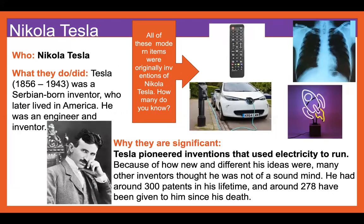Nikola Tesla, who was born in 1856 and died in 1943, was a Serbian-born inventor who later lived in America. He was an engineer and an inventor. All of the images were originally inventions of Nikola Tesla — how many do you know? Tesla pioneered inventions that used electricity to run. Because of how new and different his ideas were, many other inventors thought he was not of sound mind. He had around 300 patents in his lifetime, and around 278 have been given to him since his death.